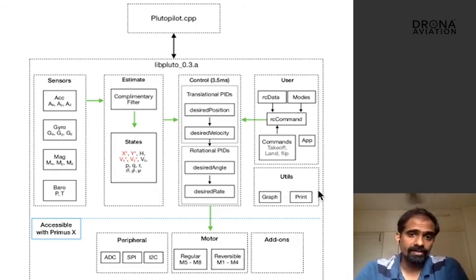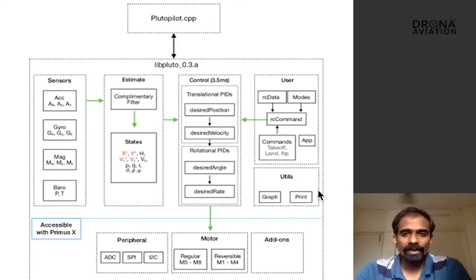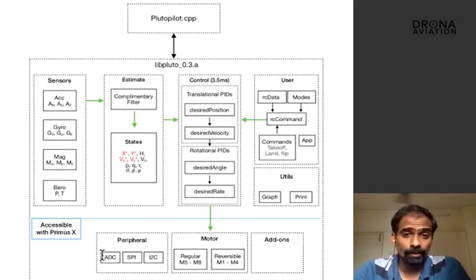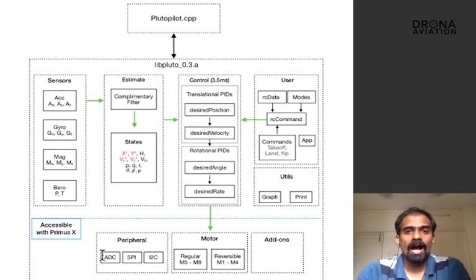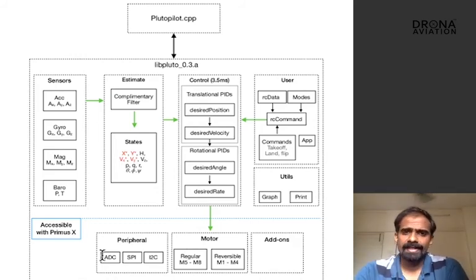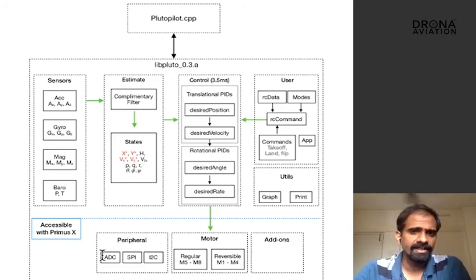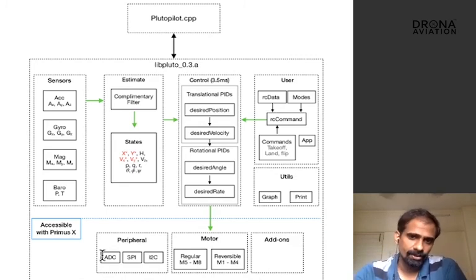All of these blocks that we saw are available in Pluto 1.2 as well as Pluto X. Pluto X has some additional features which are given in the block below. For now, we are not going to get into that. I hope you have learned something of value from this video. In the next video, we will begin programming with the Cygnus IDE using some very simple examples and we will try to understand the various loops which are used in order to control the Pluto drone.